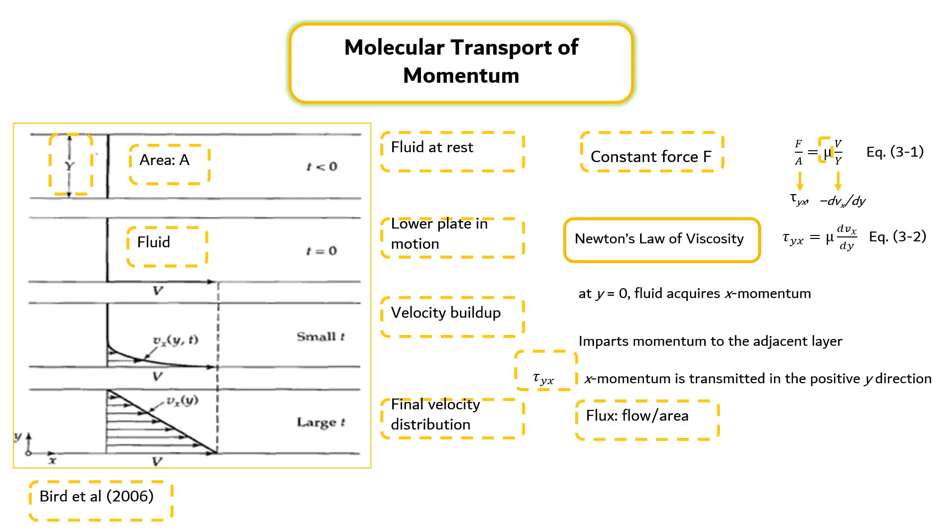where the term flux means flow per unit area. Momentum transfer occurs from a region of high velocity to a region of low velocity, with velocity gradient acting as a driving force for momentum transport.